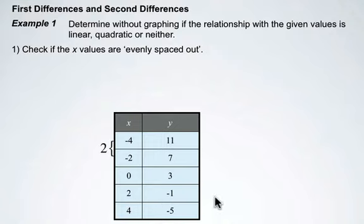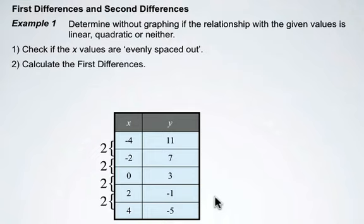The difference between the x values here is 2, another 2, another 2, and another 2. So we know that they are evenly spaced out. The second step, we're going to calculate the first differences.